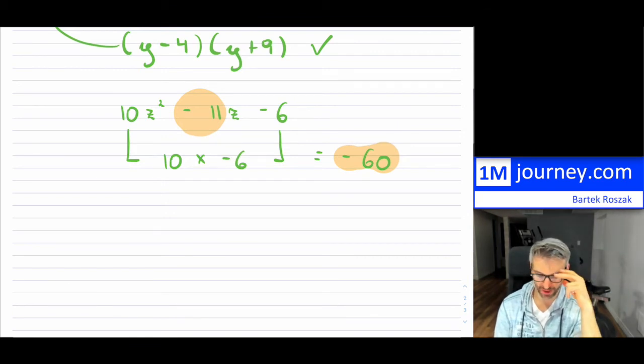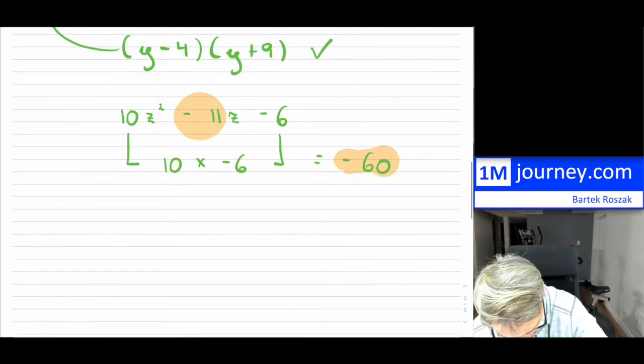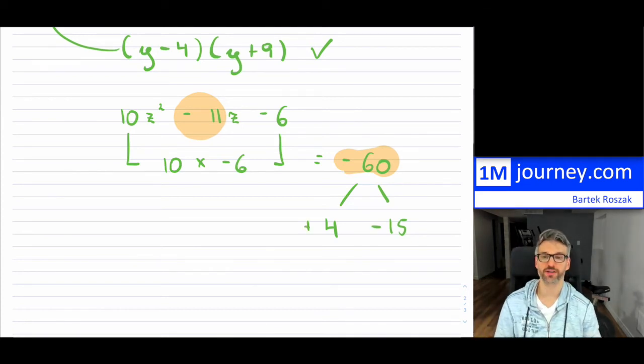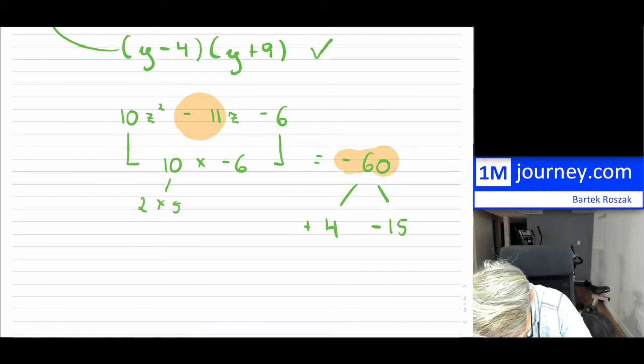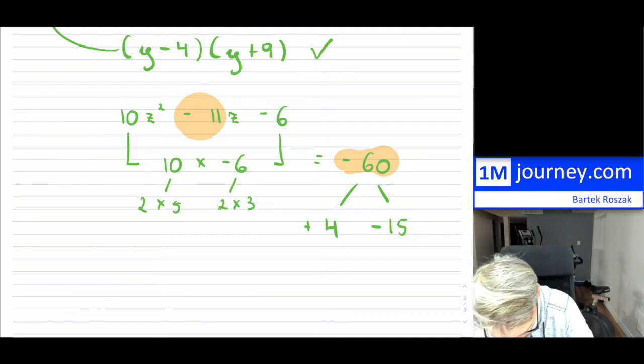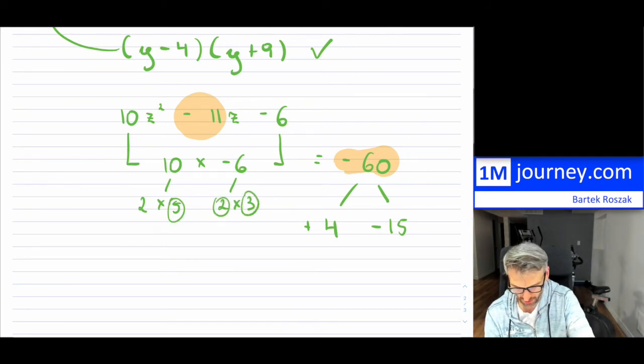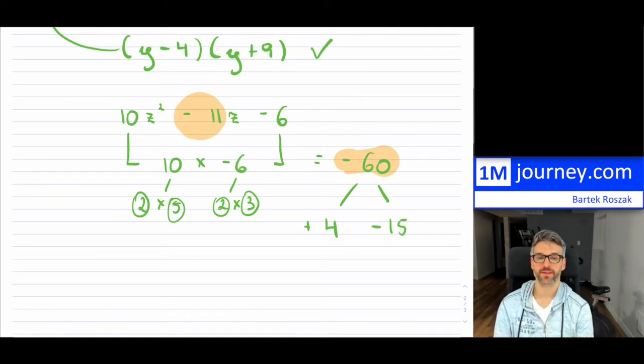And I need two numbers. When added or subtracted together are going to give me negative 11. And when multiplied are going to give me negative 60 right there. So what are two numbers? Does anything pop into my head? So I guess, well, four times 15 is 60. And so that means, if I break this down, so maybe I just got it. So four, 15 is 60. And we need negative. So this one's going to be negative, this one's going to be positive. That's what I have there. If you didn't see it, again, I would have just simply started breaking this down. Two times five, this would have been two times three. And then I would have been playing around trying to see. So notice the five and the three is 15, the two and the two is four.